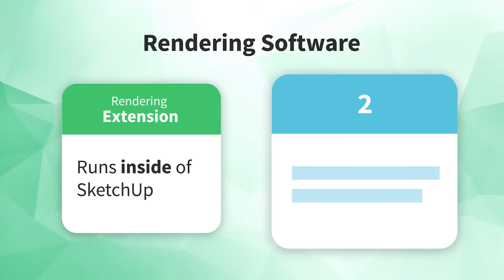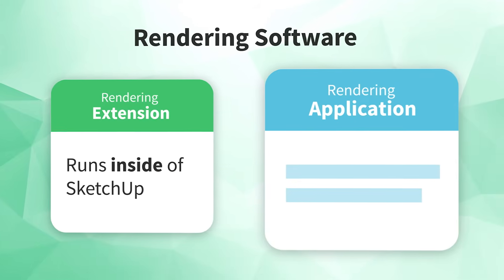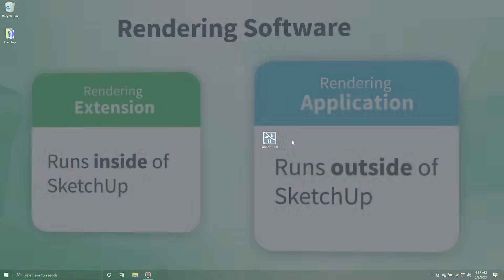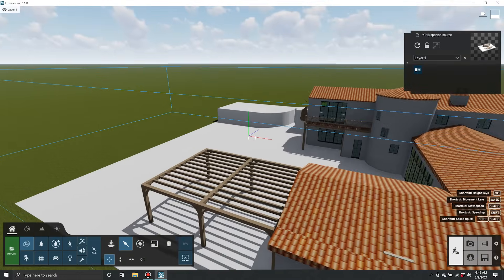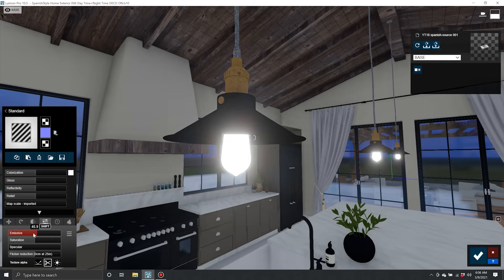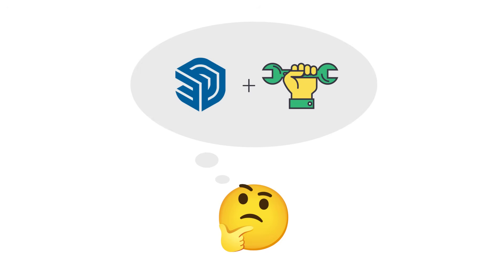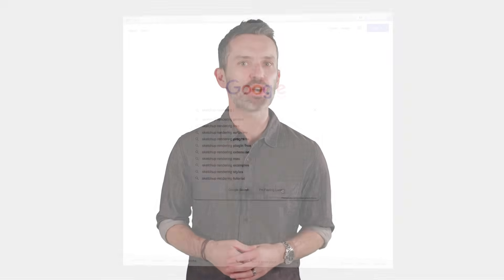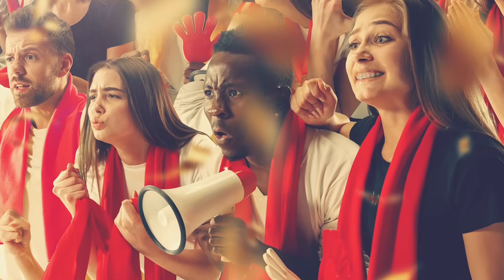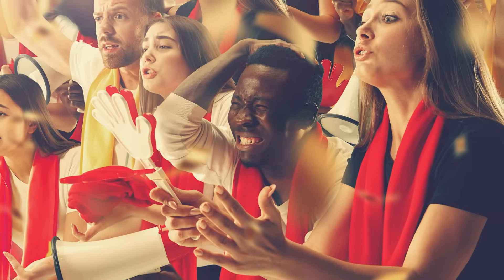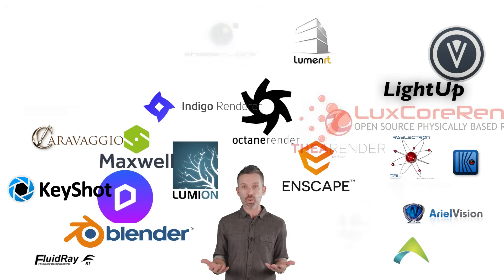The other type of rendering software is called a rendering application. This type of tool runs outside of SketchUp as a standalone application. To create a rendering, you import your finished model into the rendering application, and that's where you add your lighting and materials. Once you know that distinction, you're probably already thinking: which rendering software should I choose? Searching online to figure out which rendering tool to choose can be pretty overwhelming — it's a bit like trying to figure out which team to cheer for. Everyone will tell you theirs is the best. There were over 20 rendering extensions and more than 20 rendering applications out there.